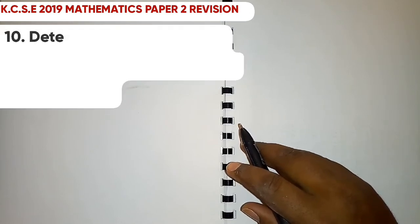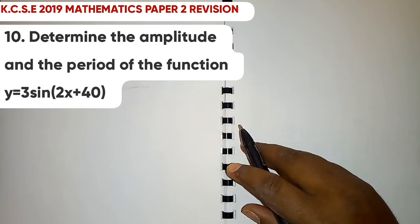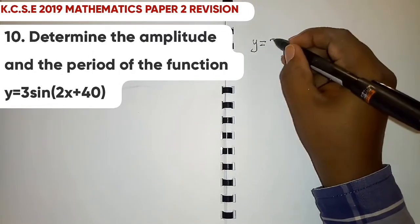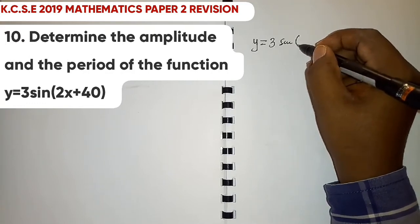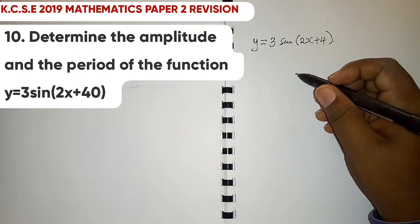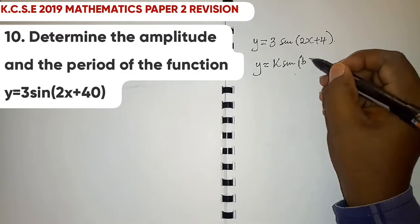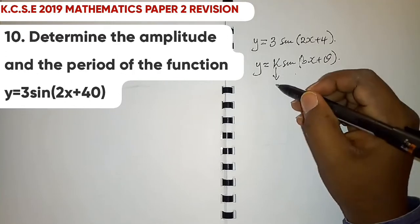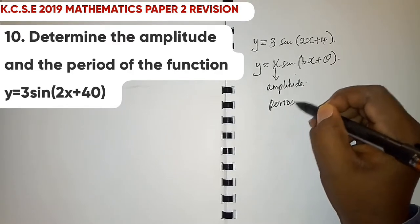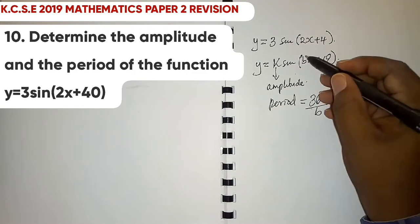Question 10 asks us to determine the amplitude and period of the function y = 3sin(2x + 40). You can find these without drawing the curve. In the general form y = k·sin(bx + θ), the value k represents the amplitude, and the period equals 360° divided by b, where b is the coefficient of x.